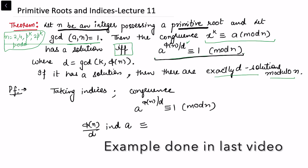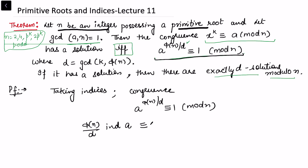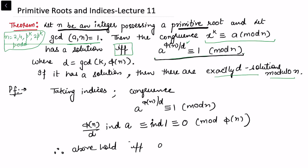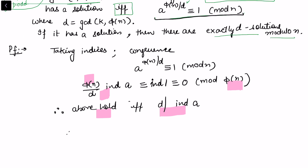Index of 1 is congruent to 0 mod φ(n). From here we can say the above holds if and only if d divides the index of a, because we have a φ(n) term and also φ(n) — so this makes sense only if d divides the index of a. This becomes the necessary condition for x^k ≡ a (mod n) to be solvable.